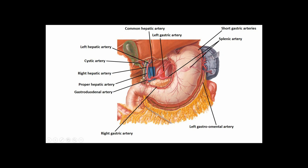The common hepatic stops being the common hepatic when it gives off the proper hepatic and the gastroduodenal artery. Off the gastroduodenal artery, in some way shape or form, we get the right gastroomental artery, which travels on the greater curvature of the stomach, supplying the stomach and the greater omentum.